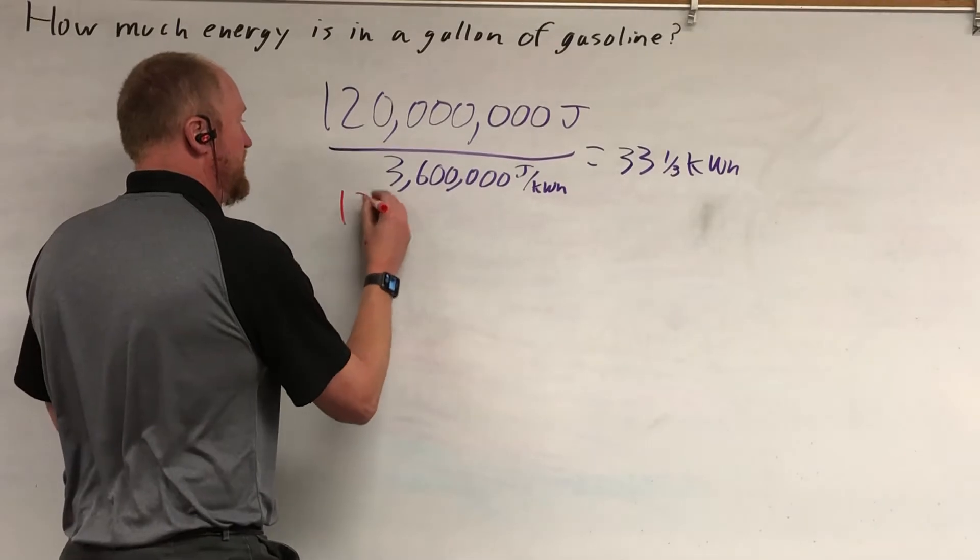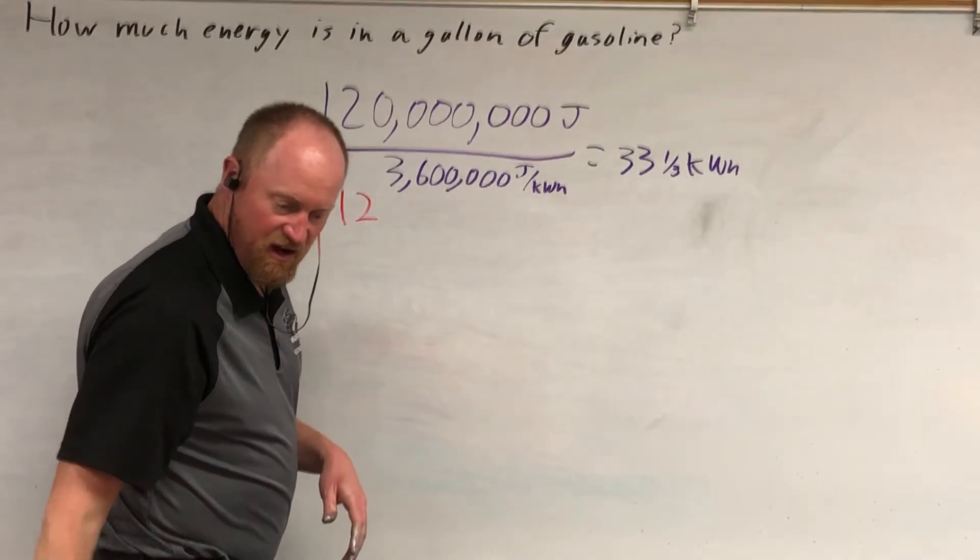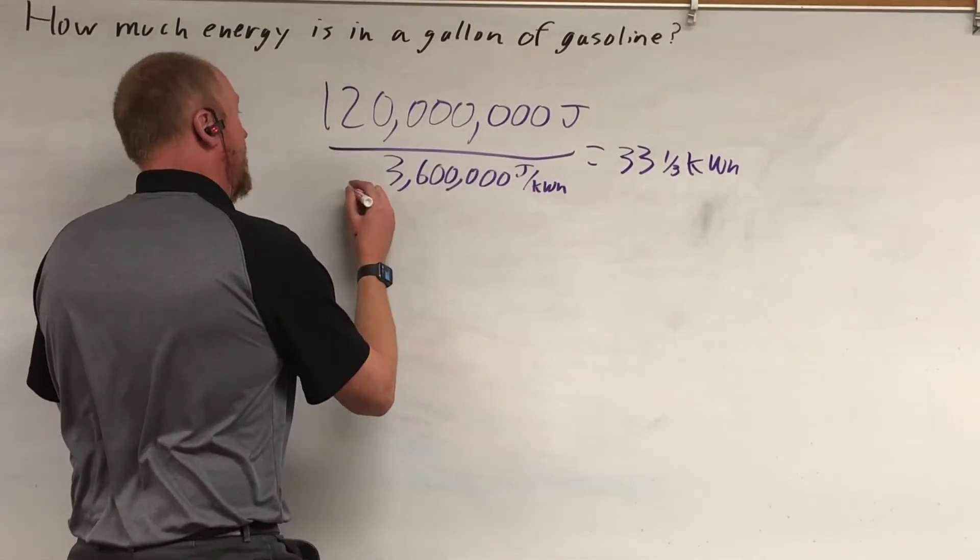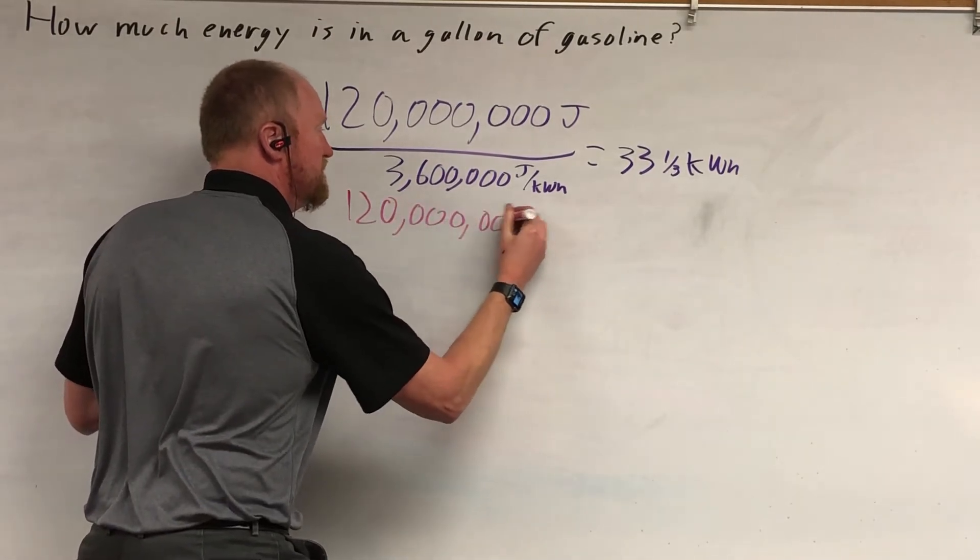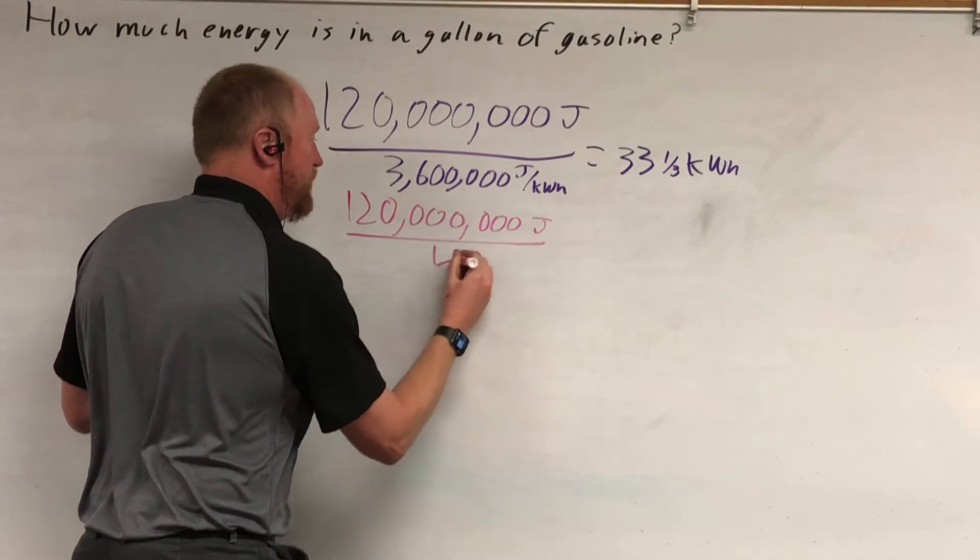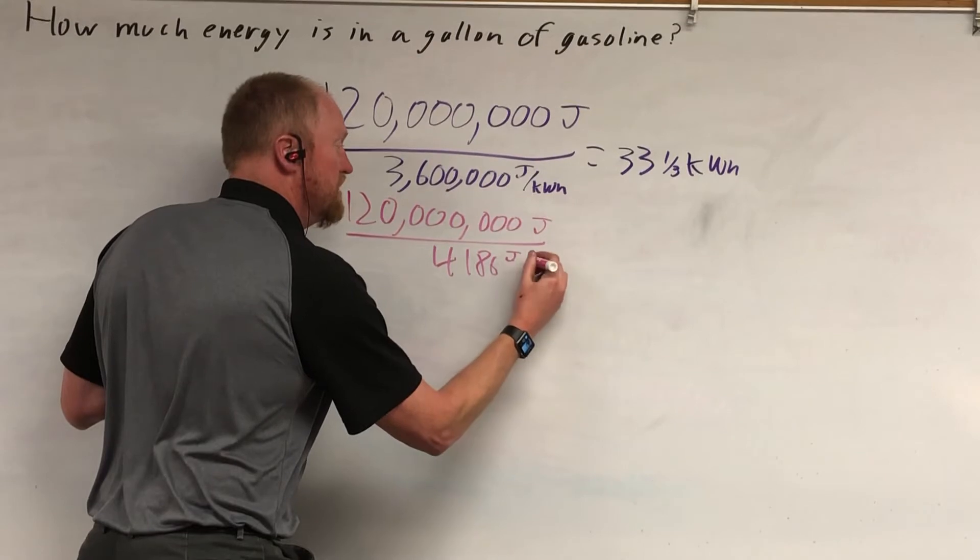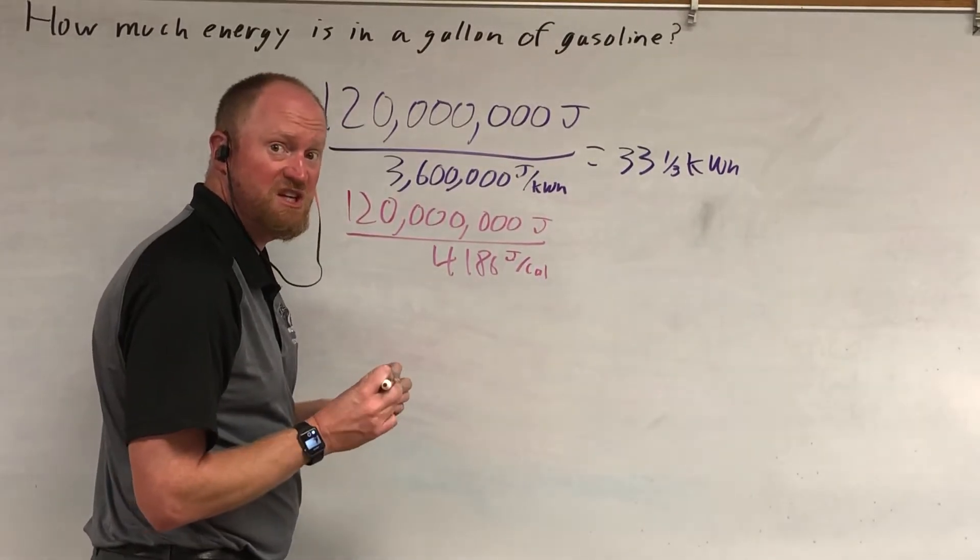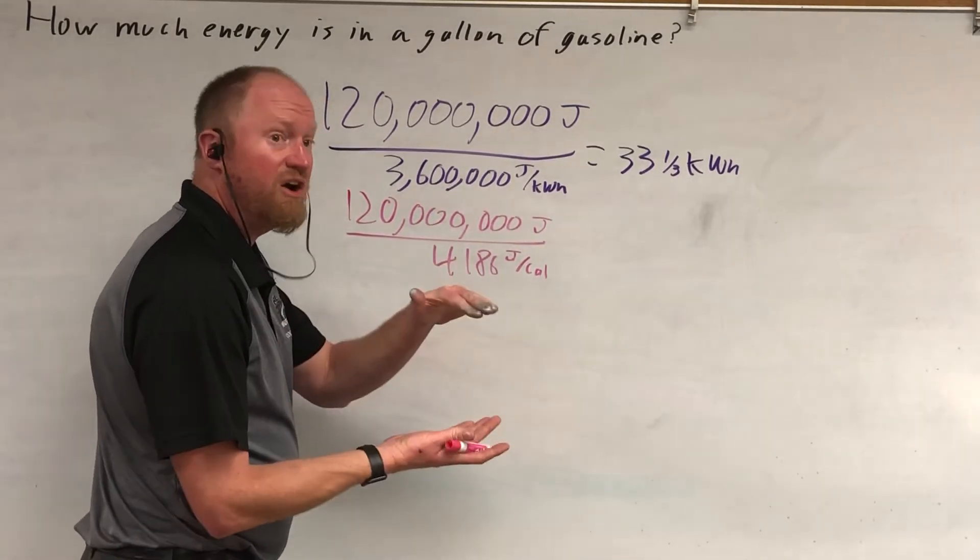So, again, we got 120, whoa, this marker is not so good. I'm going to use the pink one. So, 120 million joules divided by 4,186 joules per dietary calorie, or outside the U.S., people sometimes refer to them as kilocalories,